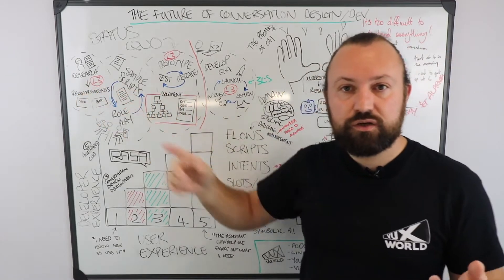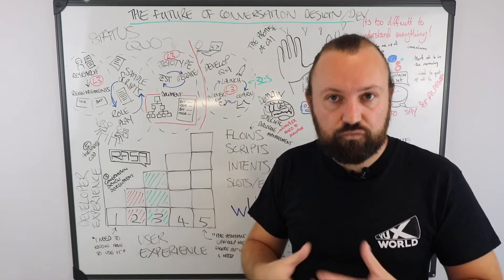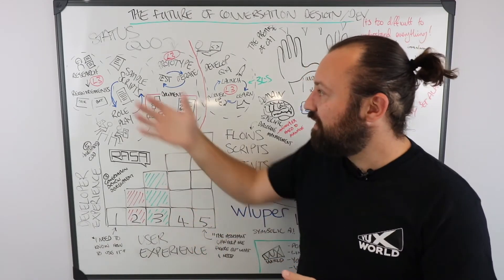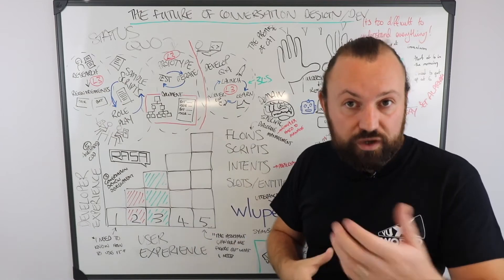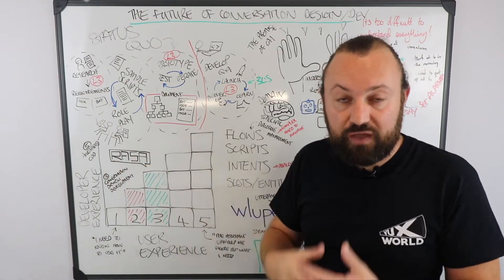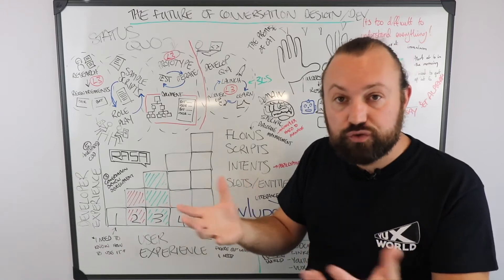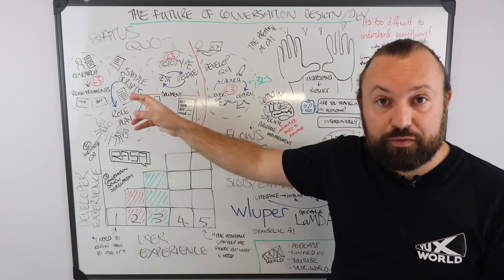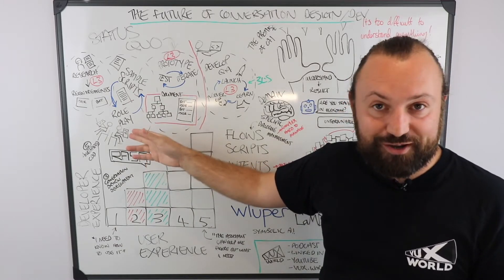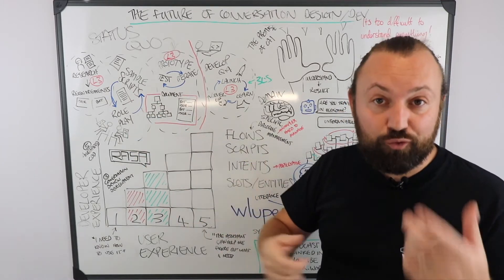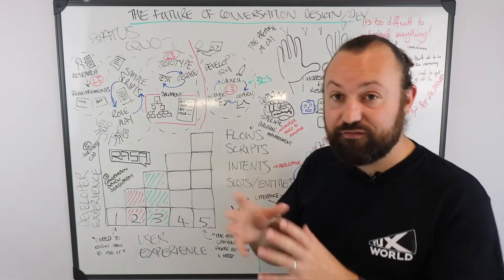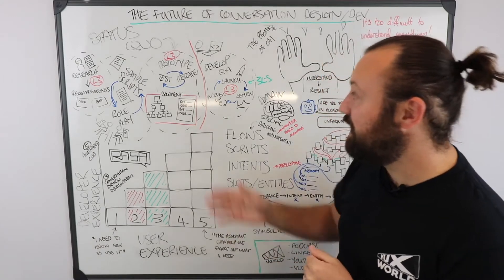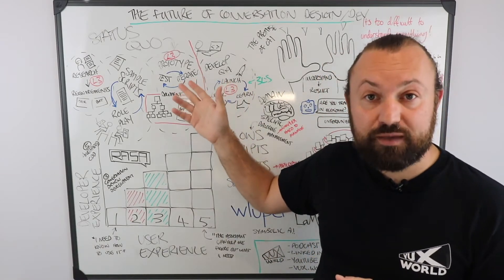You'll start out with research — researching your user needs, researching what this thing ought to be, what use cases you should prioritize. That feeds into your requirements: what is it that the user needs, what is it that you can actually deliver, and do you have the infrastructure or the technology to do that? That then leads you into the sample scripting and roleplay phase, which is a bit like improv — quite fun, sitting back to back and roleplaying the conversation to try and find those conversational patterns.